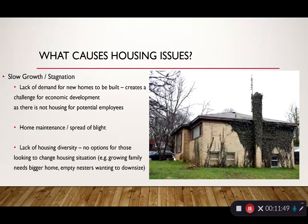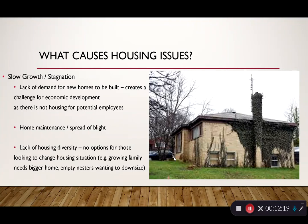With slow growth there's also a lack of housing diversity, so there are fewer options for those looking to change their housing situation — a couple that has a kid and wants a bigger house may not find it in their community and has to move to another town. Older couples looking to downsize may also lack options. So slow growth and stagnation can certainly impact housing availability and diversity.